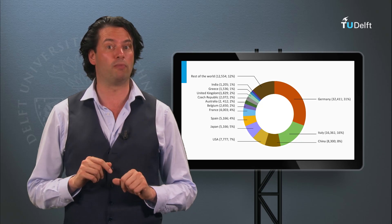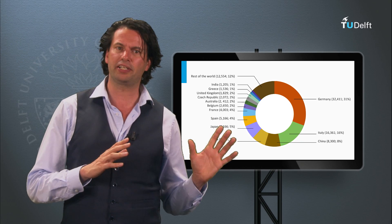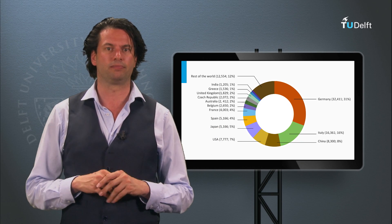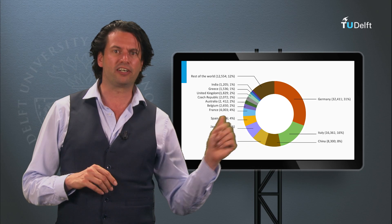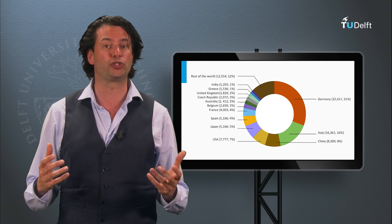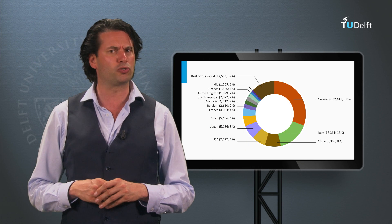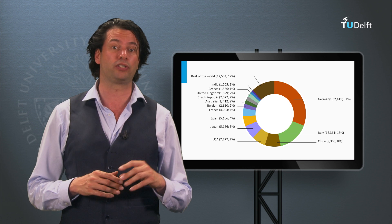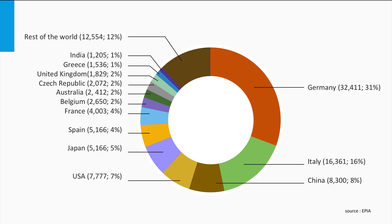Let's look in more detail at where PV is installed in the world. This figure illustrates the relative contribution of various nations to the total installed PV power in 2012. Here we can clearly see that 31% of the total PV capacity is installed in Germany, a result of the German government's progressive feed-in tariff policy of the last 10 years.